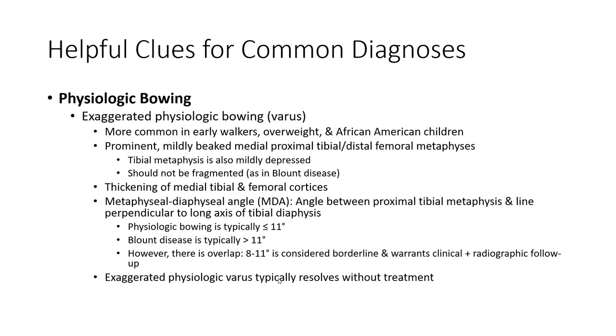From four to thirteen years, normal is around 6 degrees valgus. Exaggerated physiologic bowing (varus) is more common in early walkers, overweight children, and African American children.